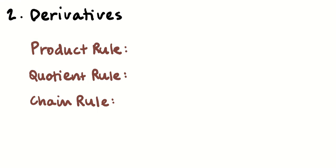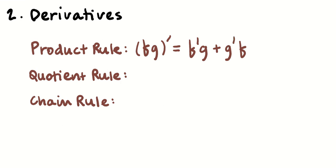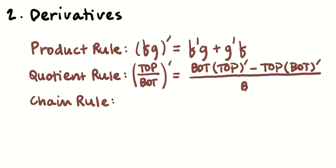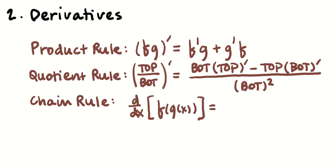We need to know our derivative rules: product rule, quotient rule, and chain rule. For the product rule, take the derivative of one factor and leave the other the same, then add the derivative of the other factor times the first. The quotient rule: (bottom × derivative of top − top × derivative of bottom) / bottom². The chain rule: derivative of f(g(x)) = derivative of the outside leaving the inside the same, times the derivative of the inside.